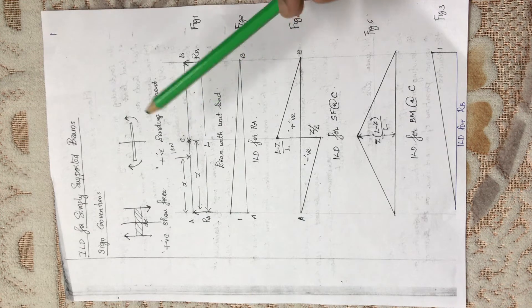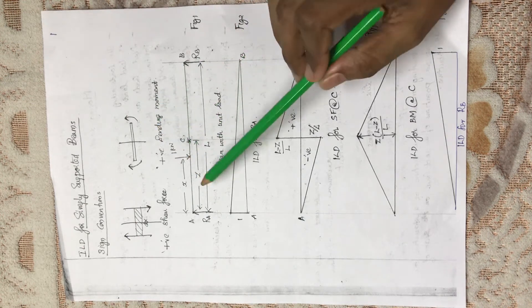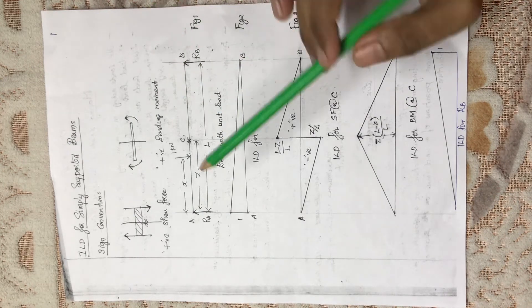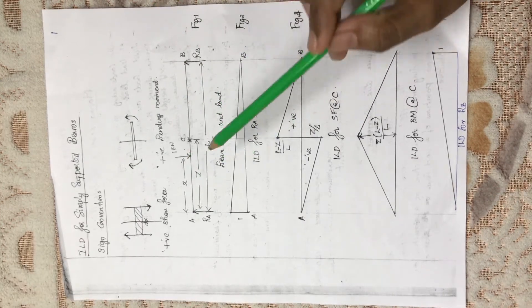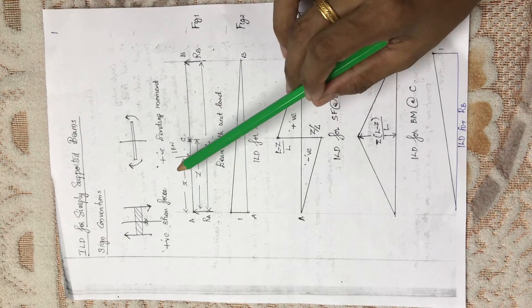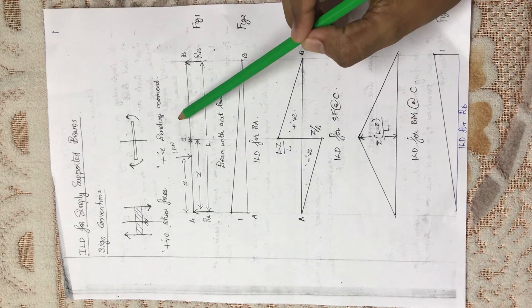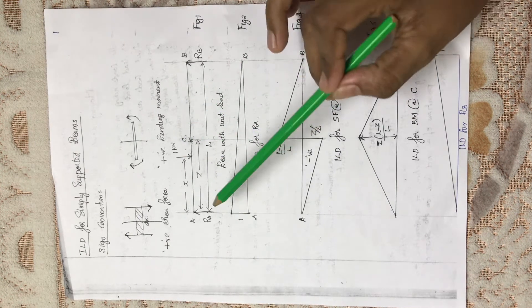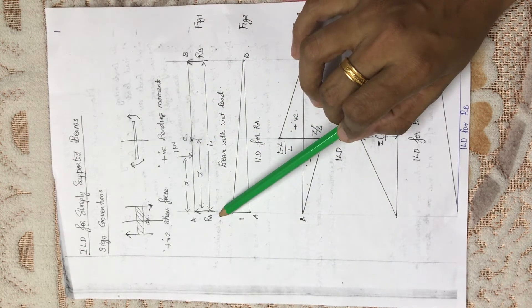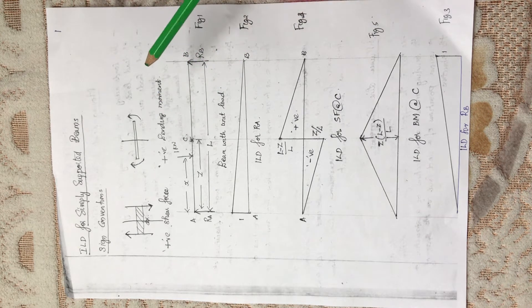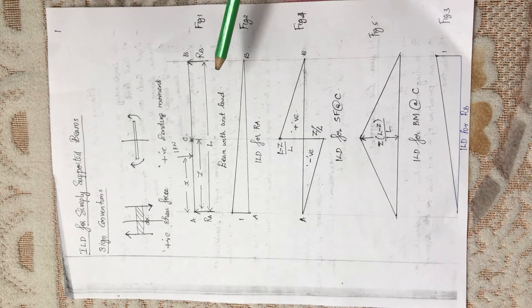Before moving on to the problem, the first thing is to find the support reactions RA and RB. For a simply supported beam carrying a point load of 1 kN at a distance H from support A — with the remaining distance being L minus H — RA equals 1 × (L − H) / L, and RB equals H / L.